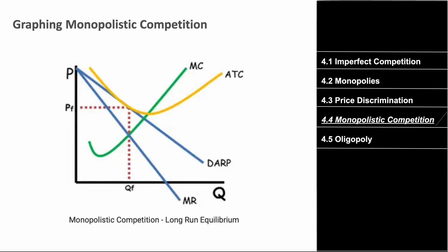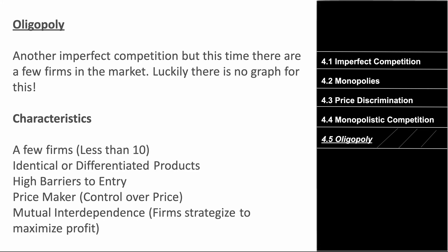Now let's cover oligopolies — a few firms, typically fewer than ten. It's not a single firm like a monopoly, nor hundreds like monopolistic competition. Products can be identical or differentiated, barriers to entry are very high, firms are price makers, and the key distinguishing feature is mutual interdependence — firms strategize with other firms in their market to maximize their own profit.